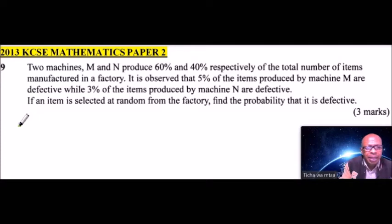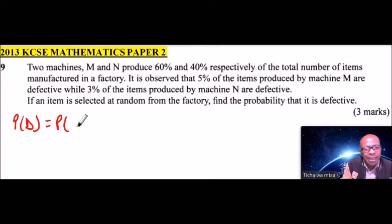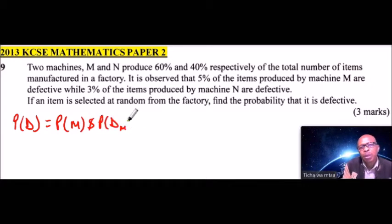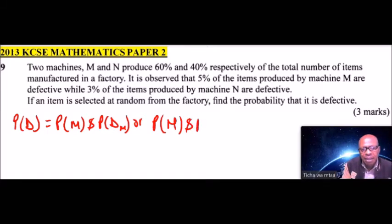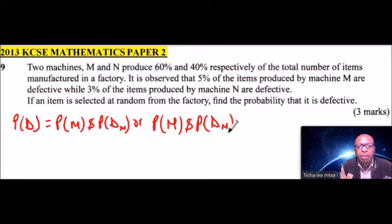We will say that the probability that an item is defective — we can use D — is equal to either the item is produced by machine M and it is defective, or it is produced by machine N and it is defective. We use D_M to represent defective when produced by machine M, and D_N for defective when produced by machine N.